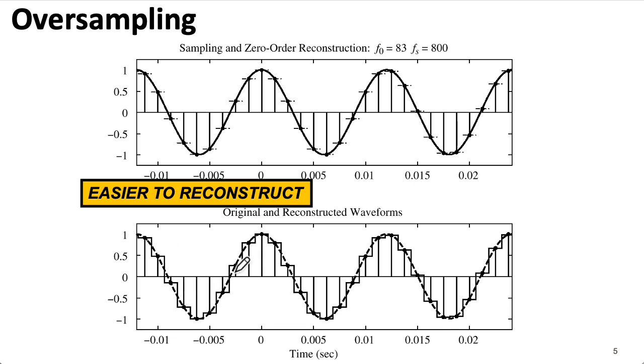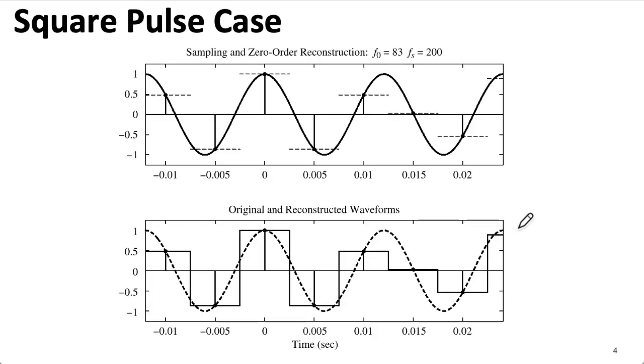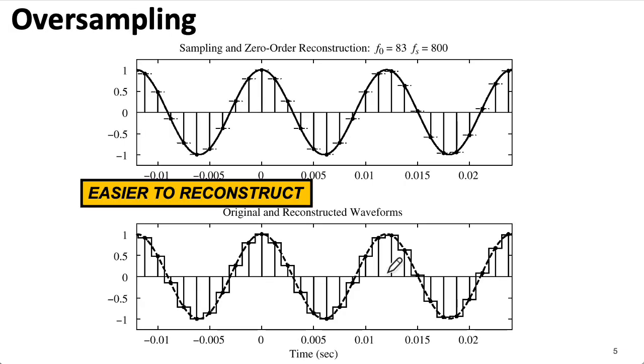But I want to emphasize that this sequence of numbers here at the faster sample rate does not contain any more information than this sequence of samples at the lower sample rate. In fact, you could start from these samples, use digital signal processing to create these samples, and then send those out your analog reconstruction filter.